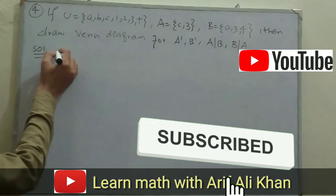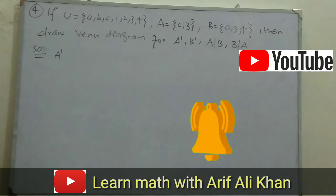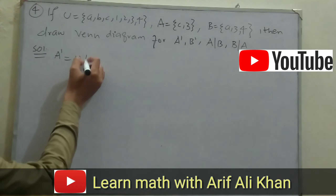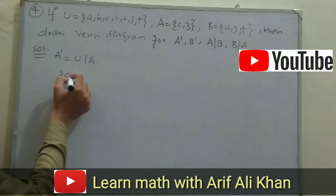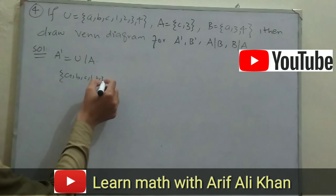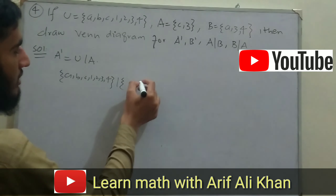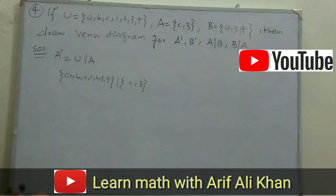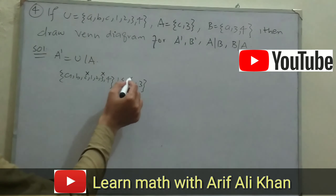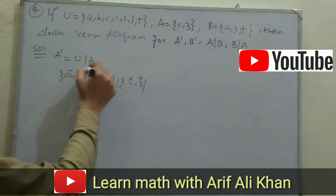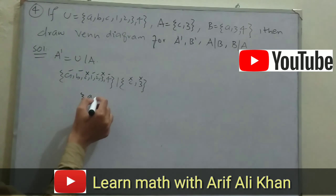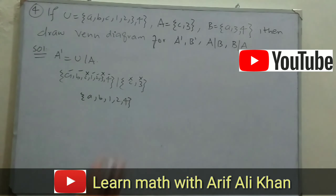First we are finding A complement. A complement means the subtraction of set A from the universal set, so A complement = U - A. Our U = {A,B,C,1,2,3,4} minus A = {C,3}. Since C and 3 are present in both sets, they are not part of the difference. So A complement = {A, B, 1, 2, 4}.